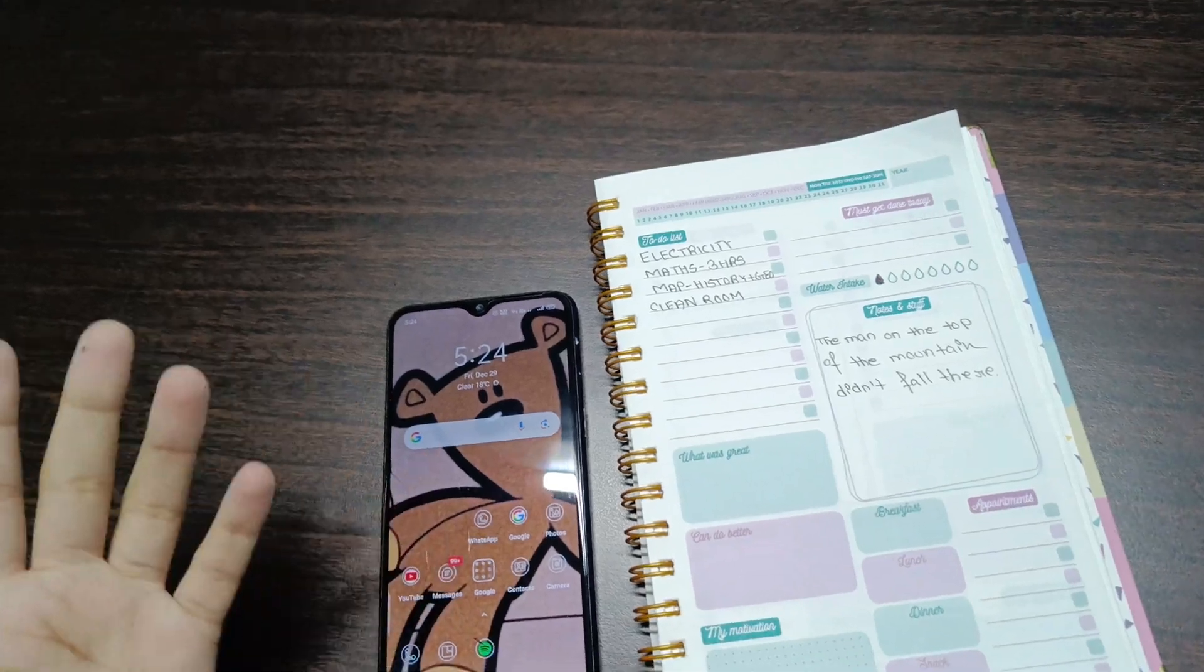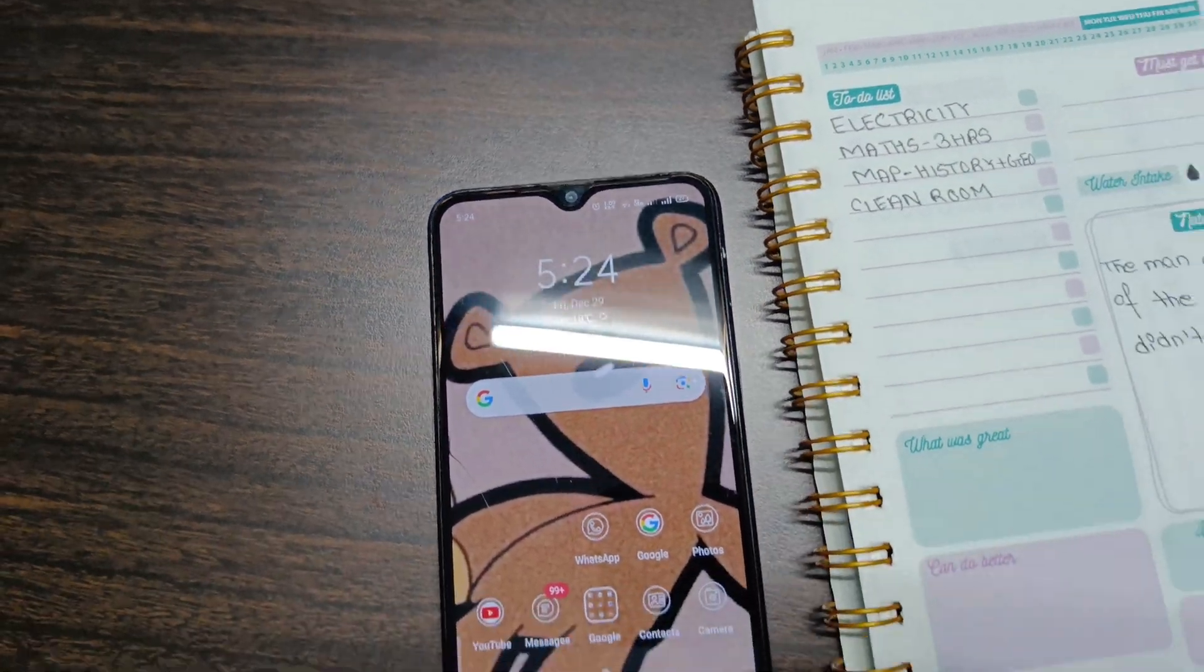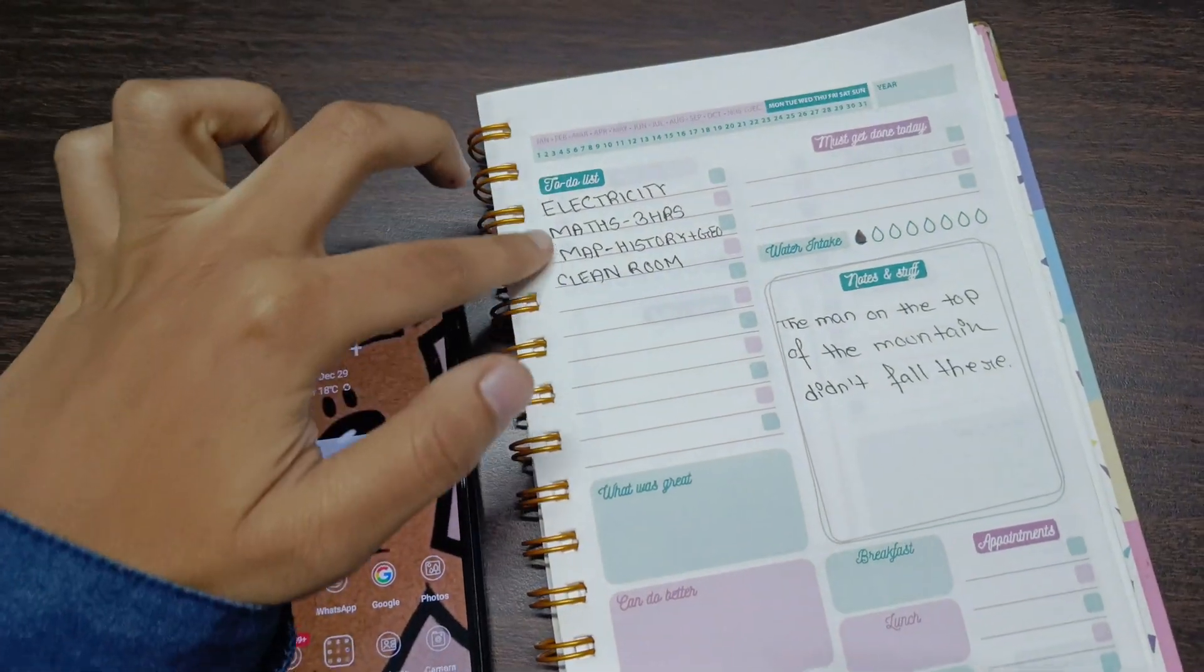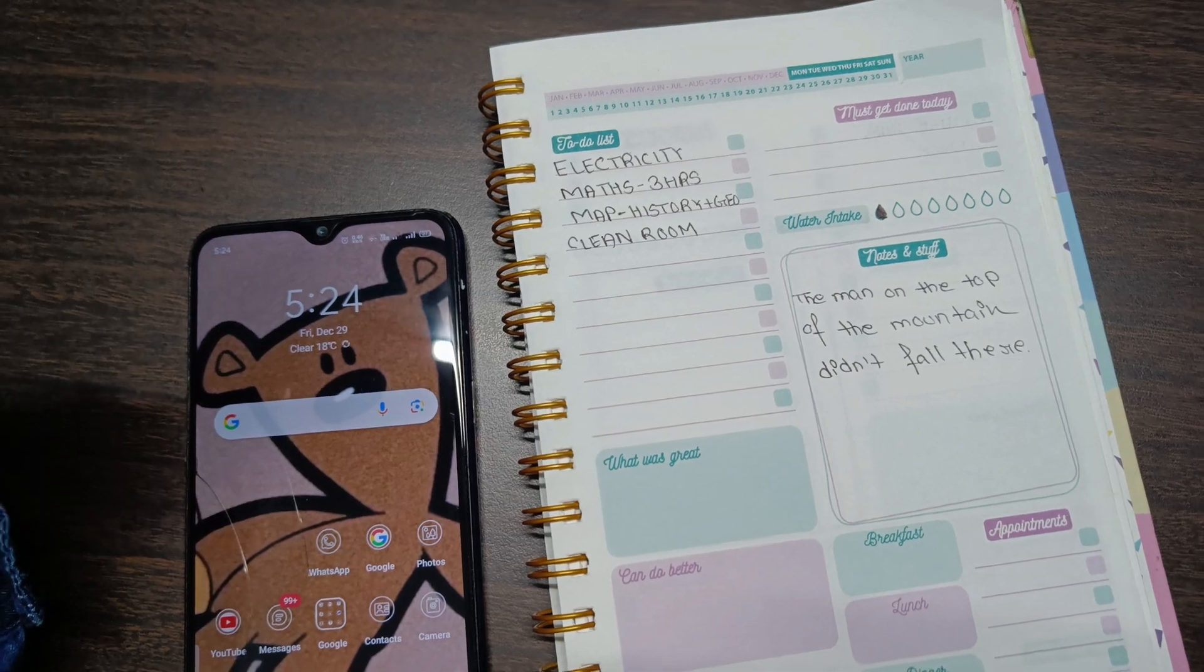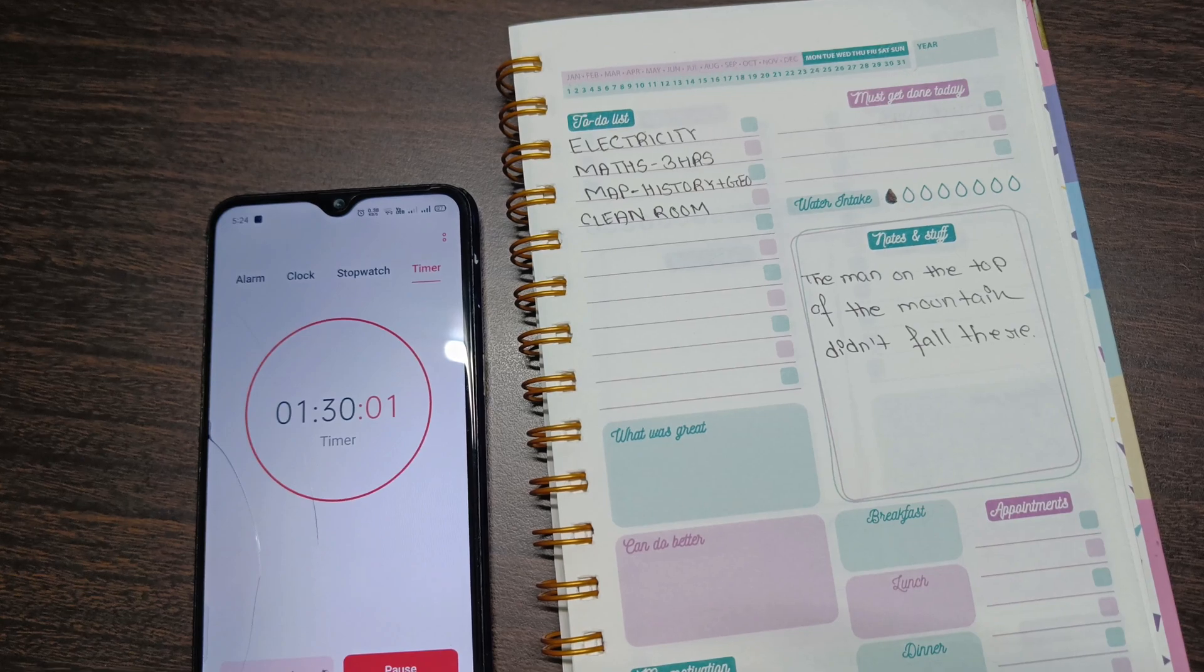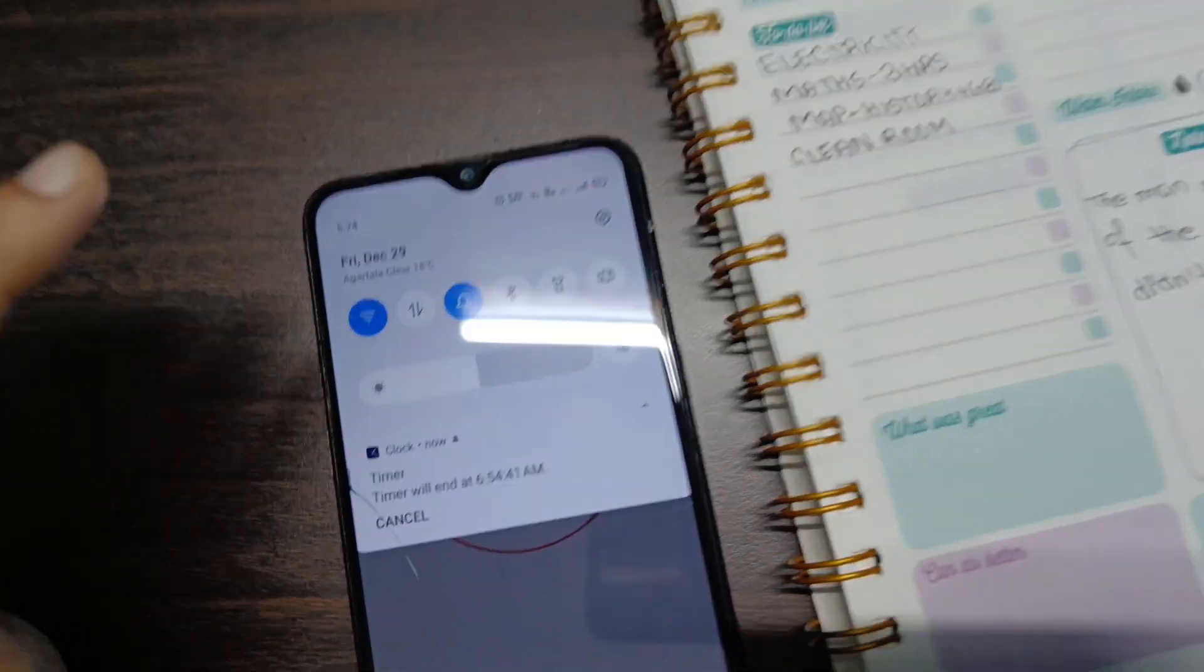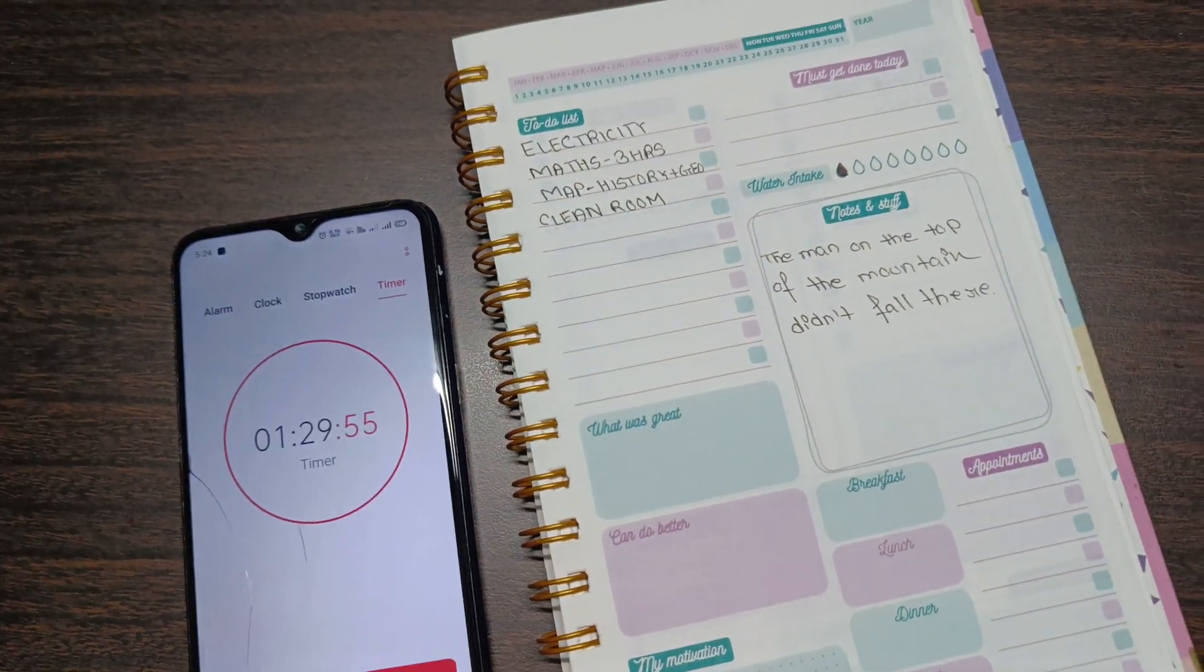Hi everyone, today is 29th December, Friday, and it's currently 5:24 AM. This is my to-do list for today. Right now I'll place a timer of 1 hour 30 minutes. This timer will end at 6:54 AM, so let's start doing mathematics now.